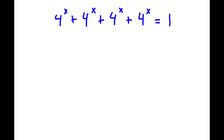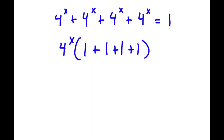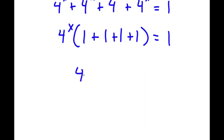In this problem, I have 4 to the power of x plus 4 to the power of x plus 4 to the power of x plus 4 to the power of x is equal to 1. To solve this, I'm going to factor out 4 to the power of x from my left-hand side, giving me 4 to the power of x times 1 plus 1 plus 1 plus 1 equals 1. Since 1 plus 1 plus 1 plus 1 equals 4, I have 4 to the power of x times 4 equals 1.